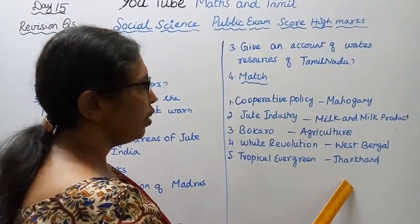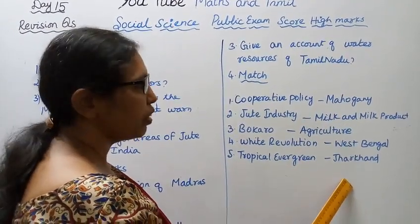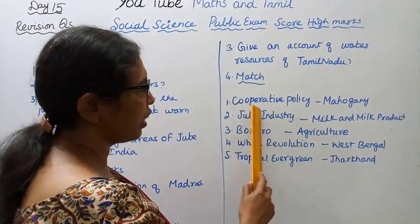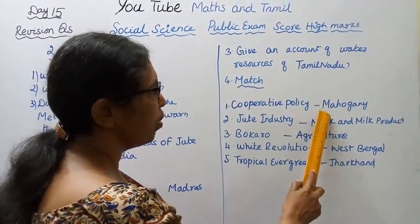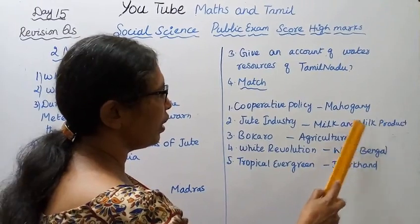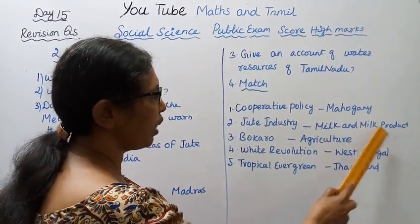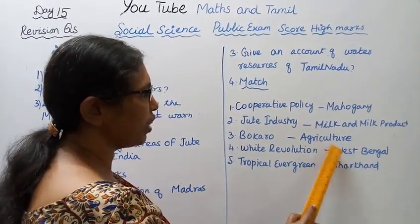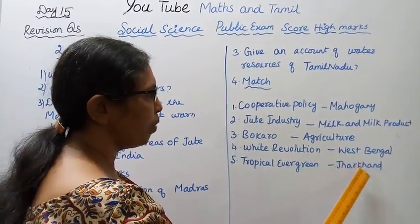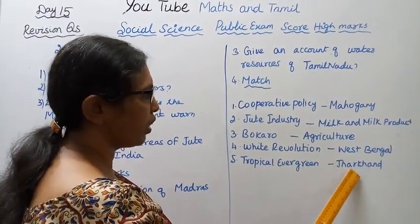On the right hand side, match correctly. Answers: Mahagoni, milk and milk product, agriculture, West Bengal, Jharkhand.